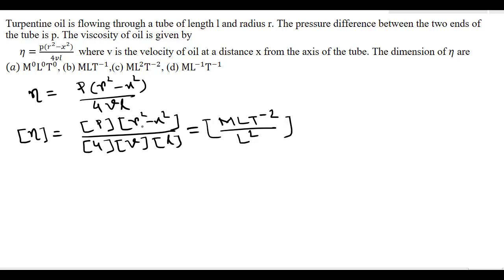Divided by 4 is a dimensionless quantity, v is LT⁻¹, and dimension of length is L.